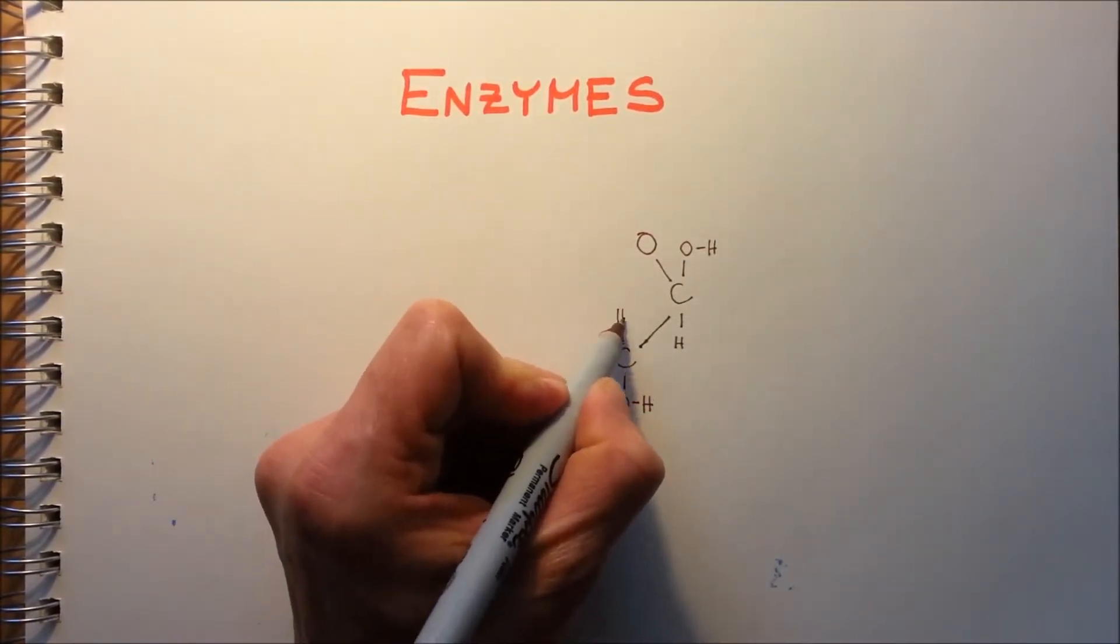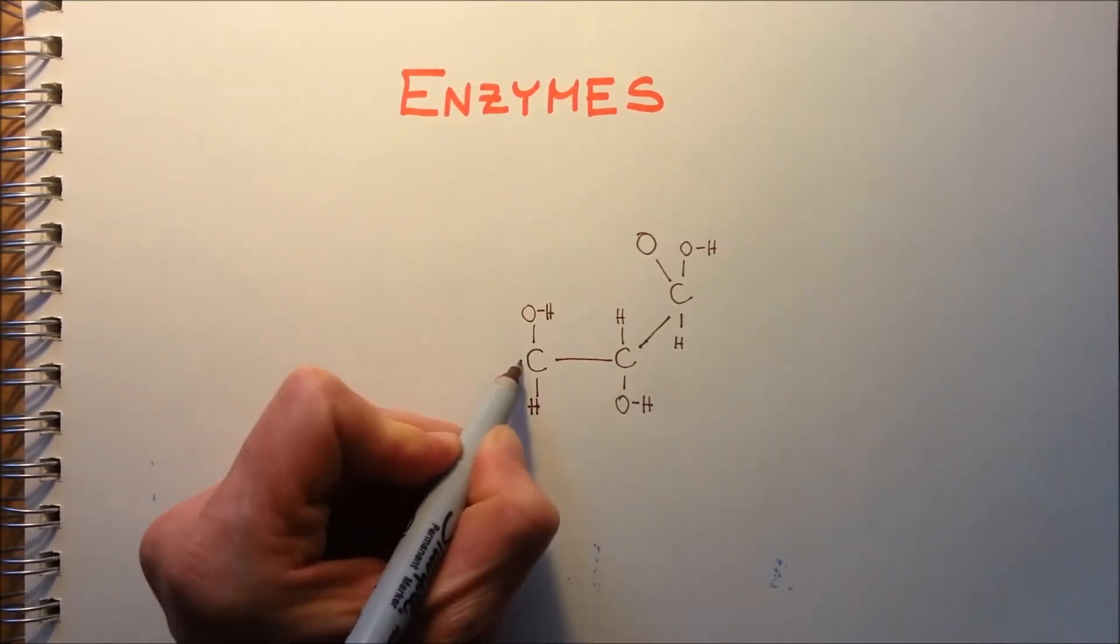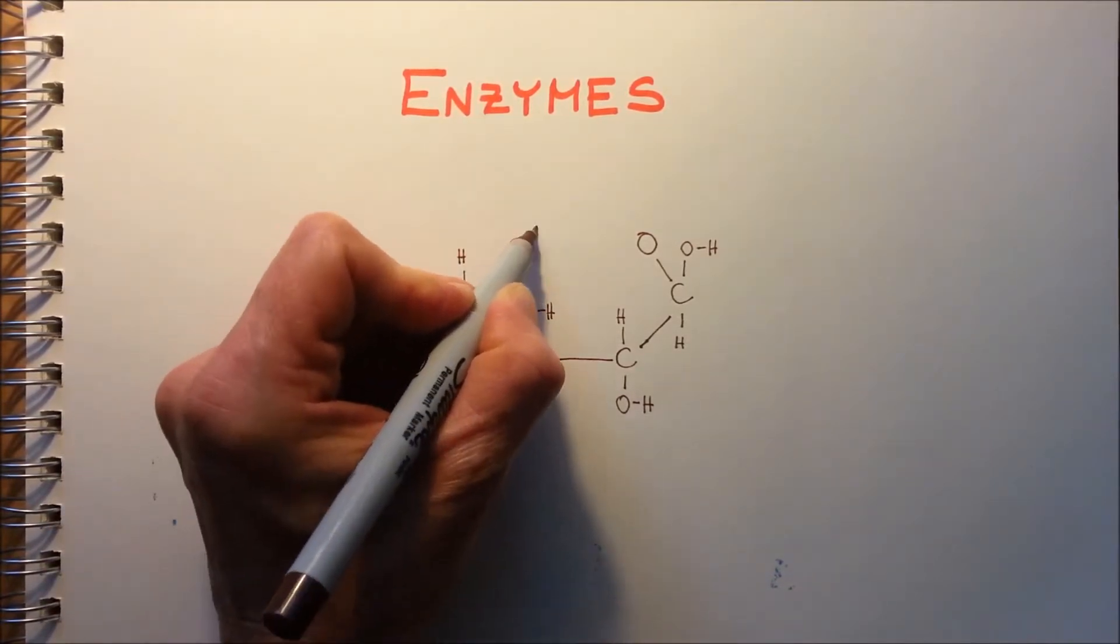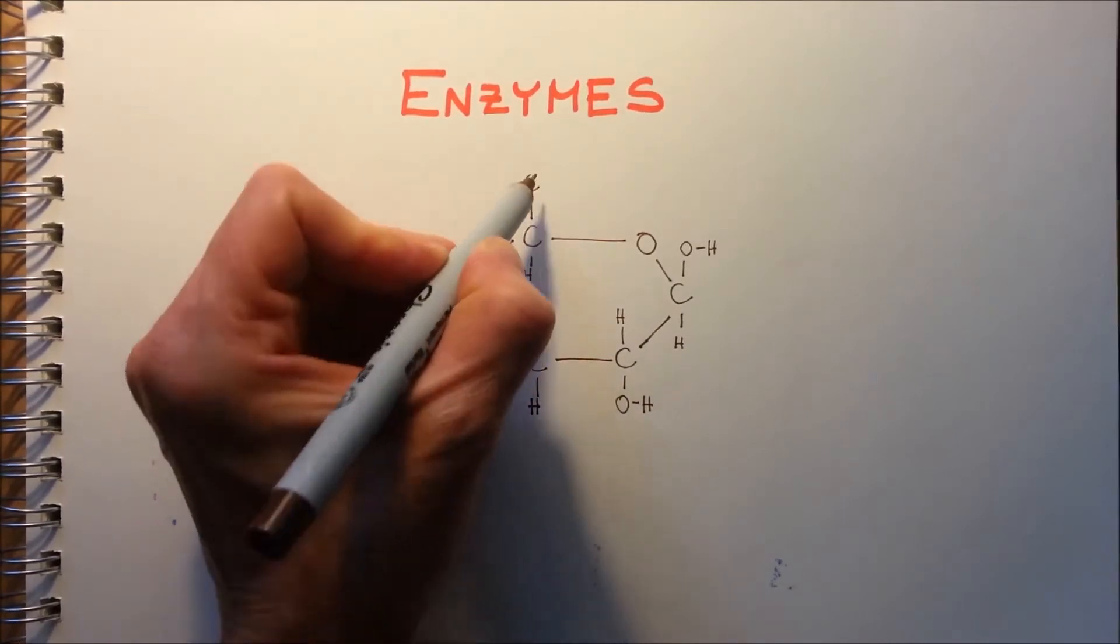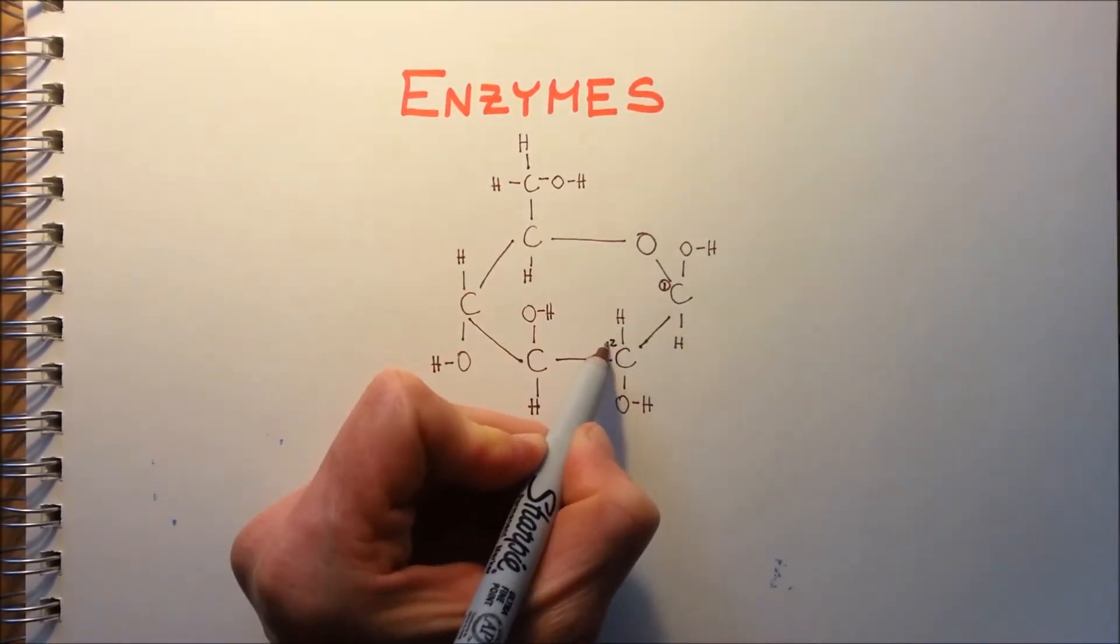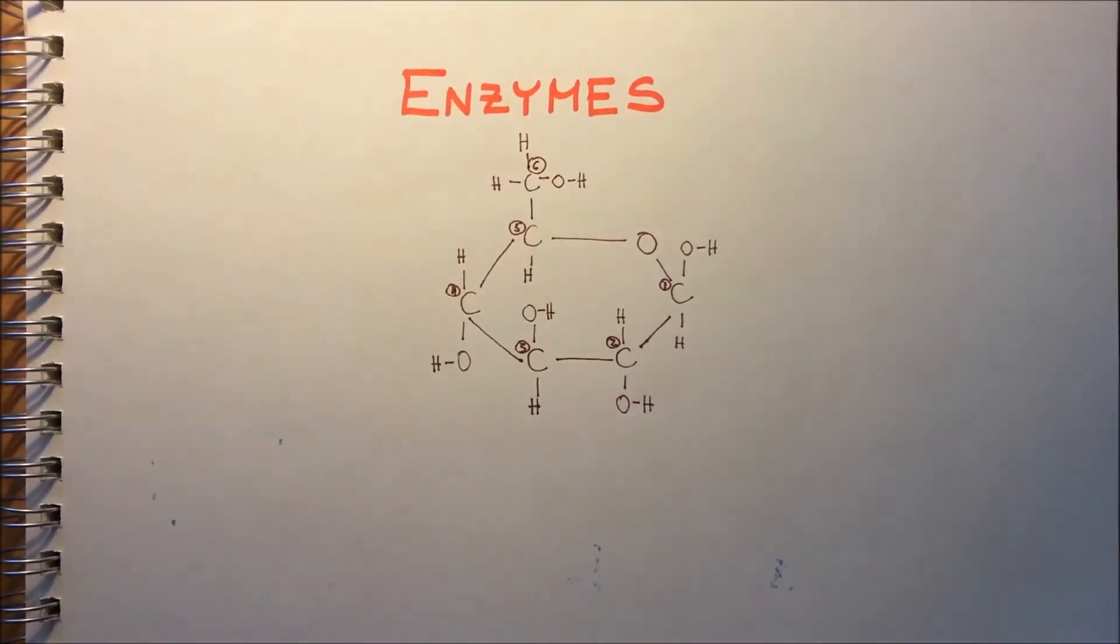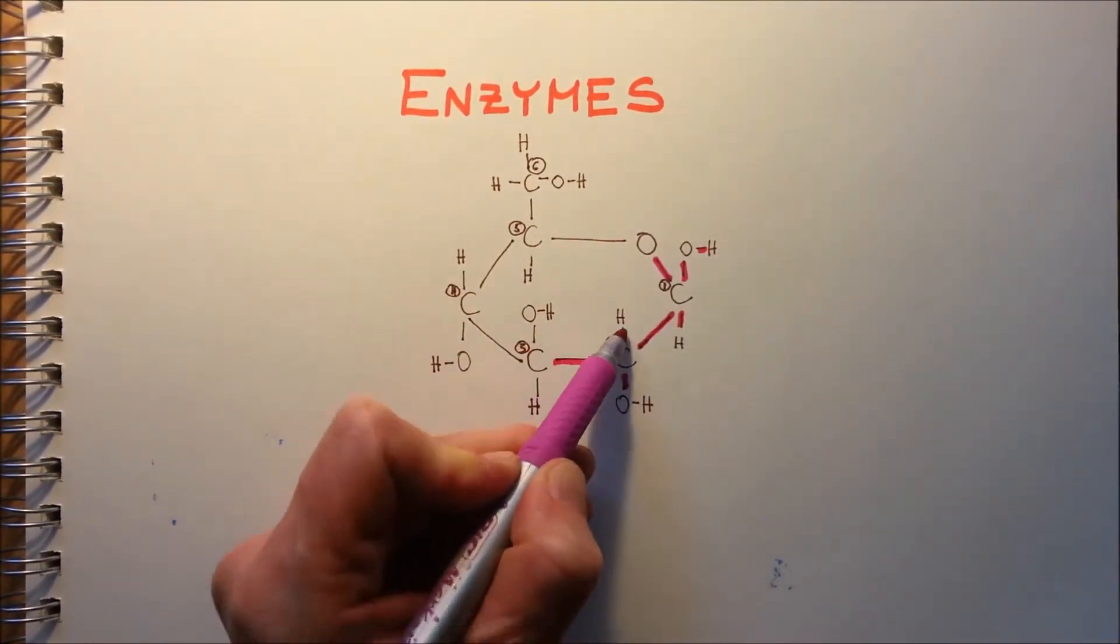Here is a glucose molecule, showing how the carbons bind together and form a ring structure, as well as the hydrogens and oxygen atoms to the carbon. Let's number those carbon atoms one through six, and between the atoms in the molecule we have bonds.